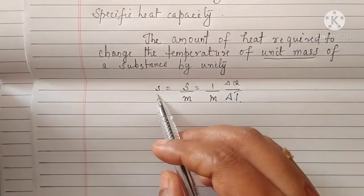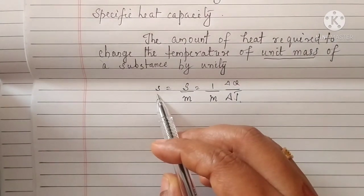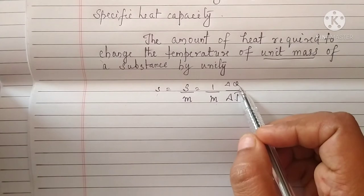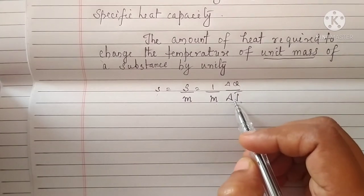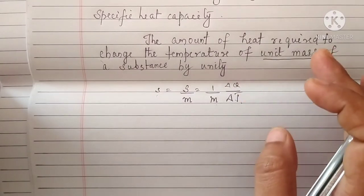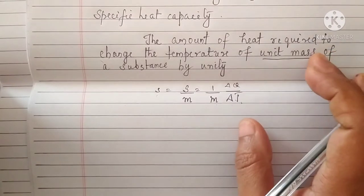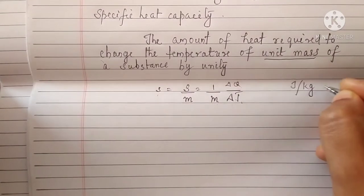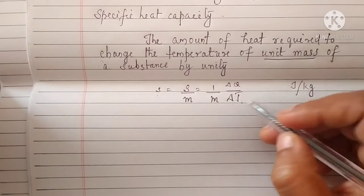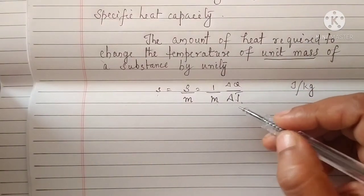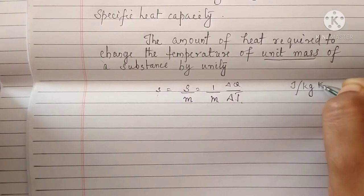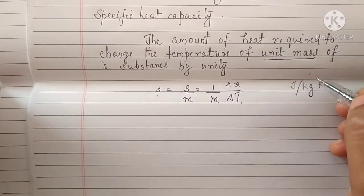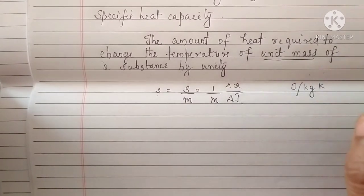Here, small s is the specific heat capacity, m is the mass of the substance, delta Q is the heat supplied to the system, and delta T is the change in temperature. The SI unit is joule per kilogram per Kelvin, or joule kilogram raised to minus one, Kelvin raised to minus one.